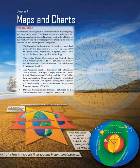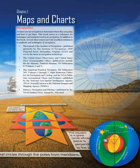Chapter 1: Maps and Charts Introduction. Aviators use air navigation to determine where they are going and how to get there. This book serves as a reference for techniques and methods used in air navigation. In addition to this book, several other sources provide excellent references to methods and techniques of navigation. The Journal of the Institute of Navigation, published quarterly by the Institute of Navigation, 1800 Diagonal Road, Alexandria, Virginia 22314, covers the latest in navigation technology.